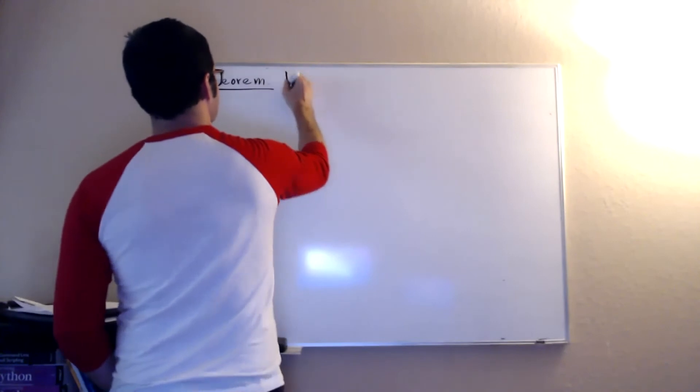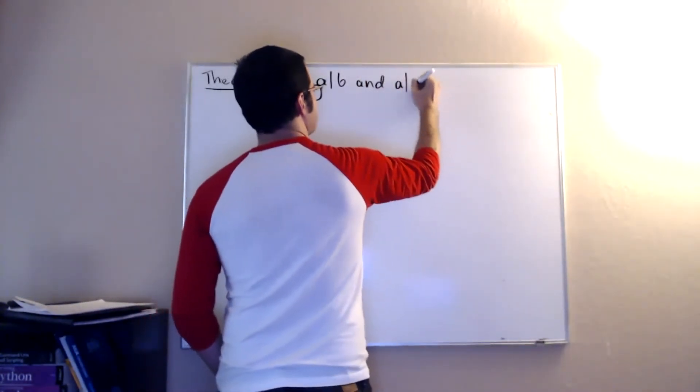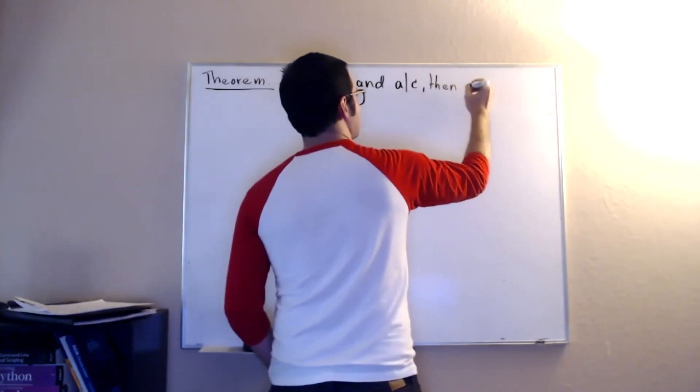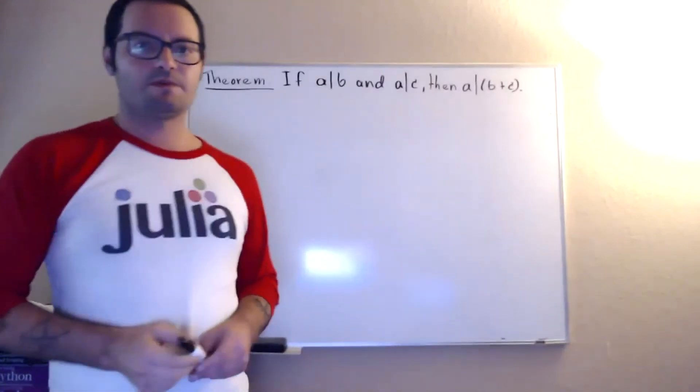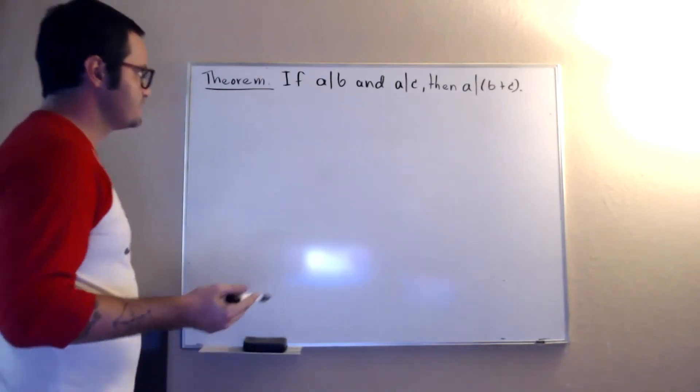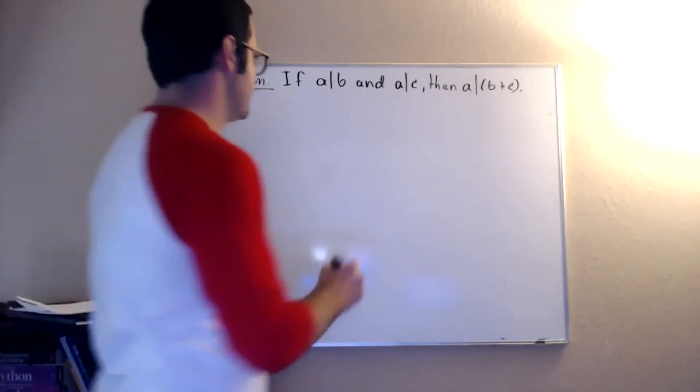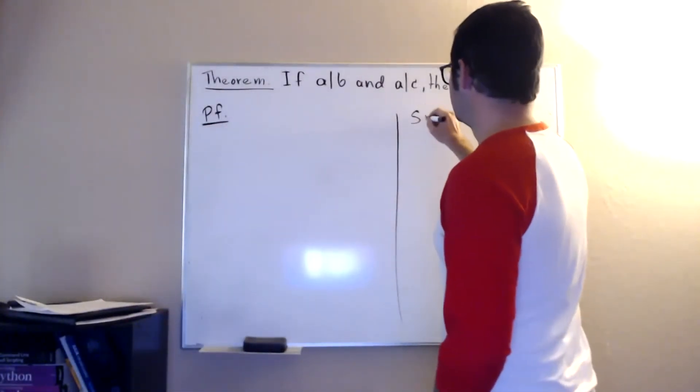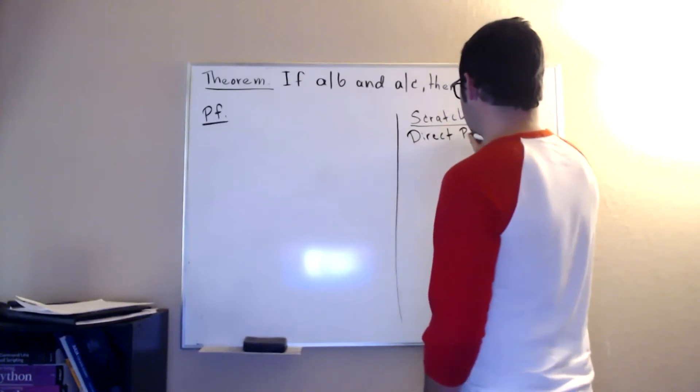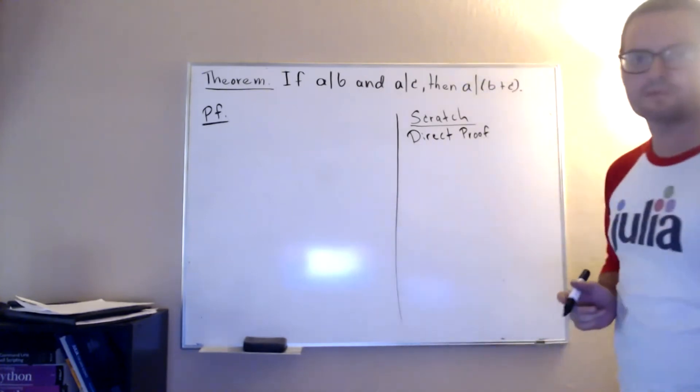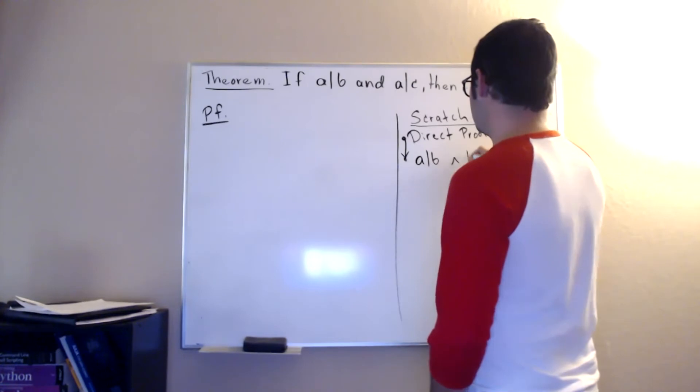All right, so now that we have this definition of divisibility, let's look at a theorem. If a divides b and a divides c, then a divides b plus c. Okay, all right, so we can do this with a direct proof.